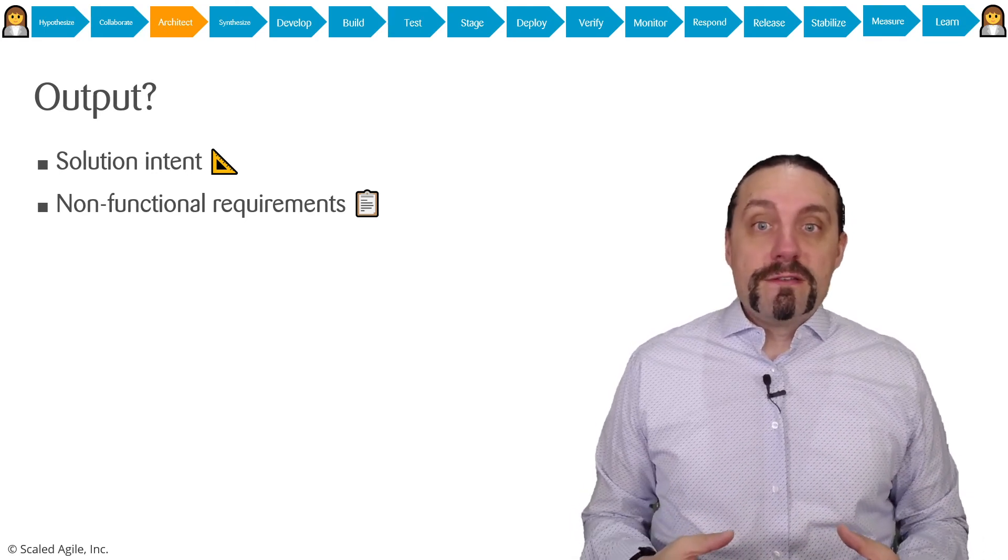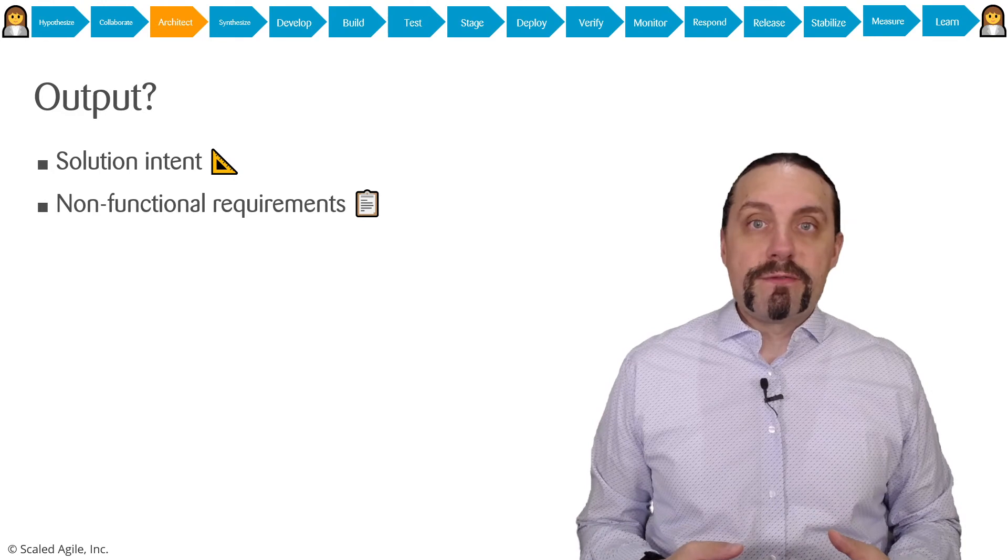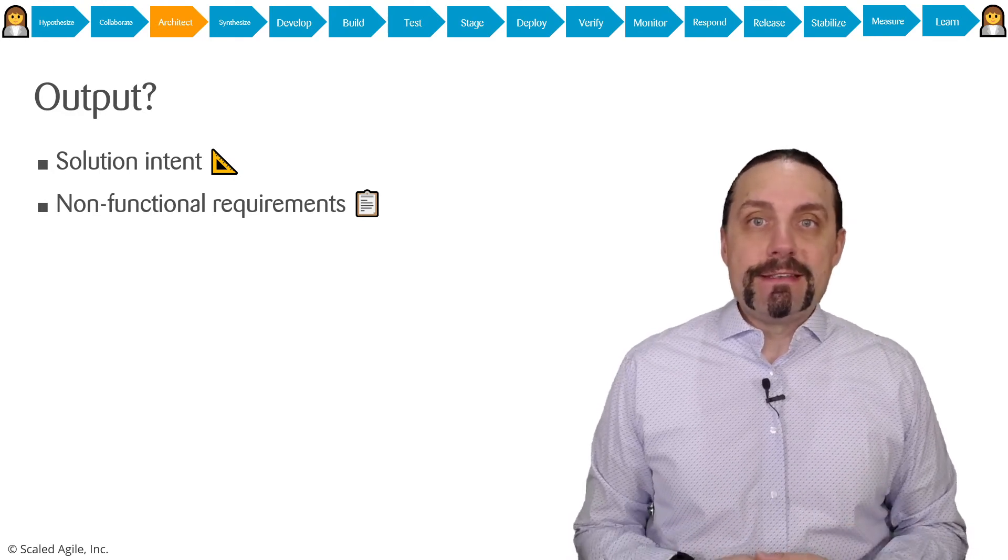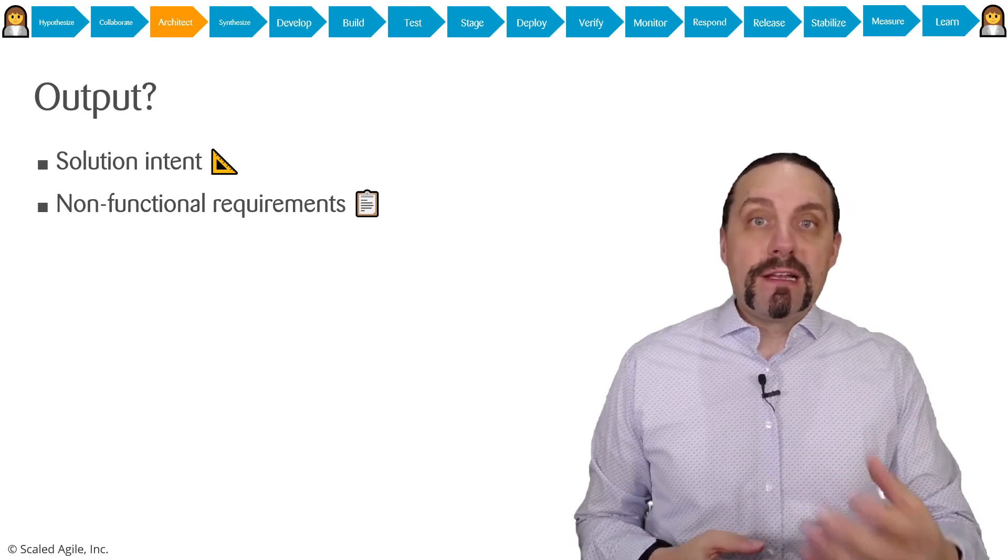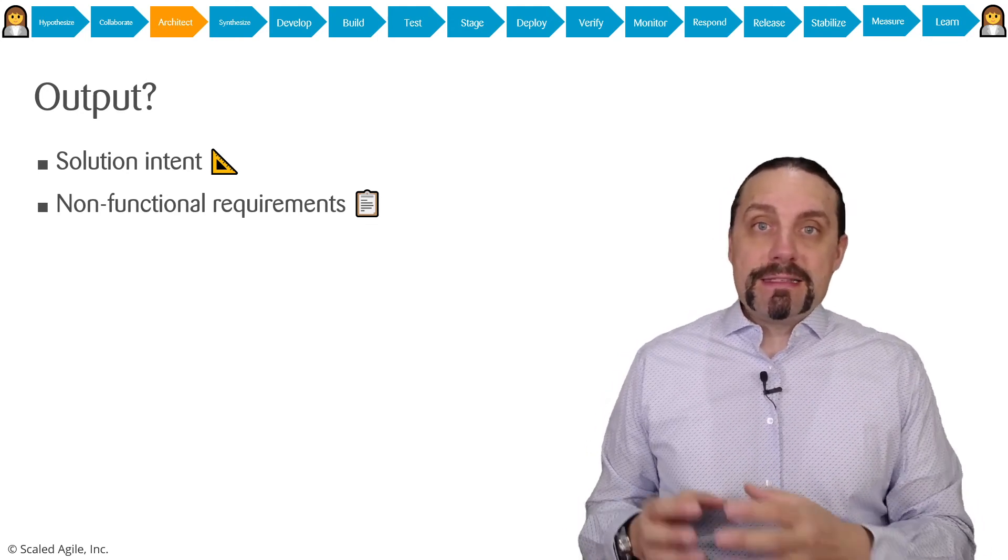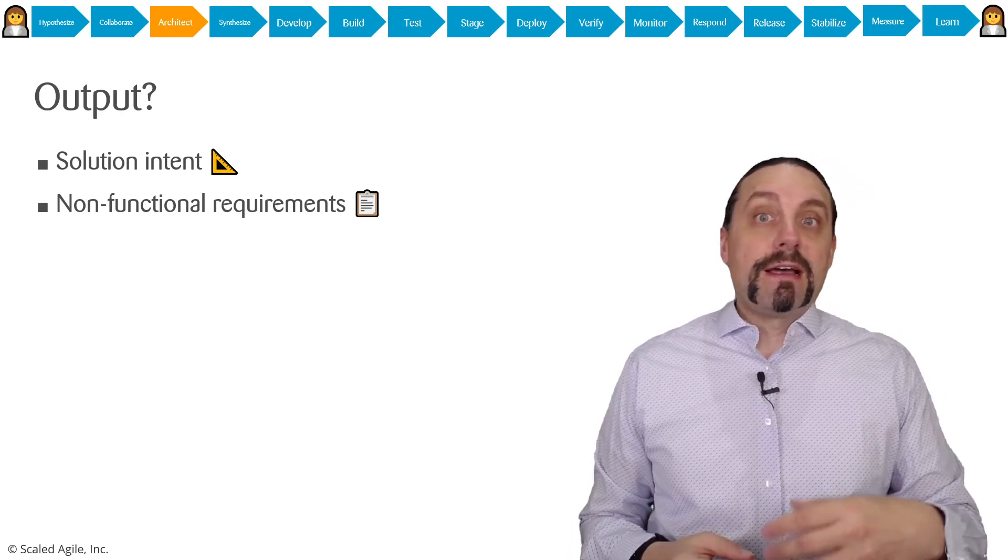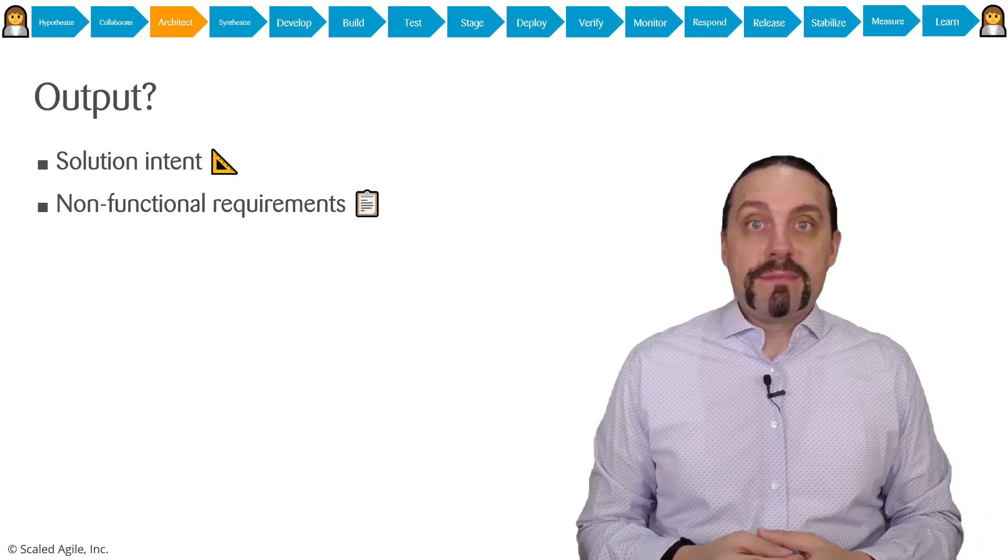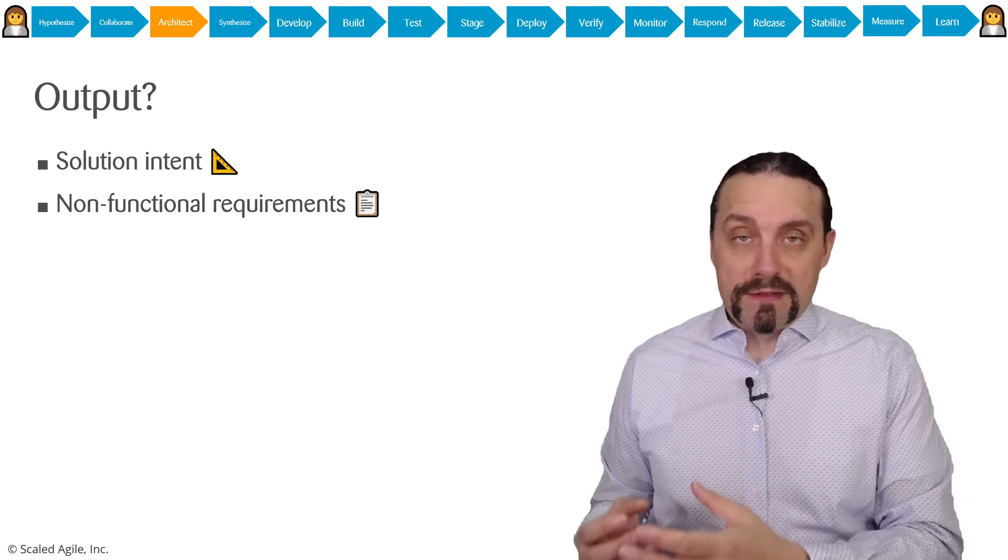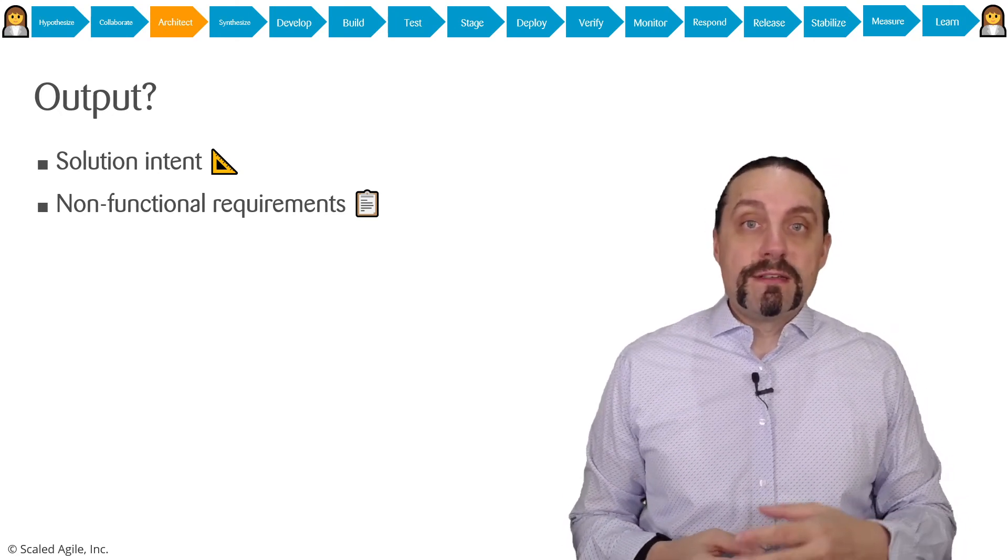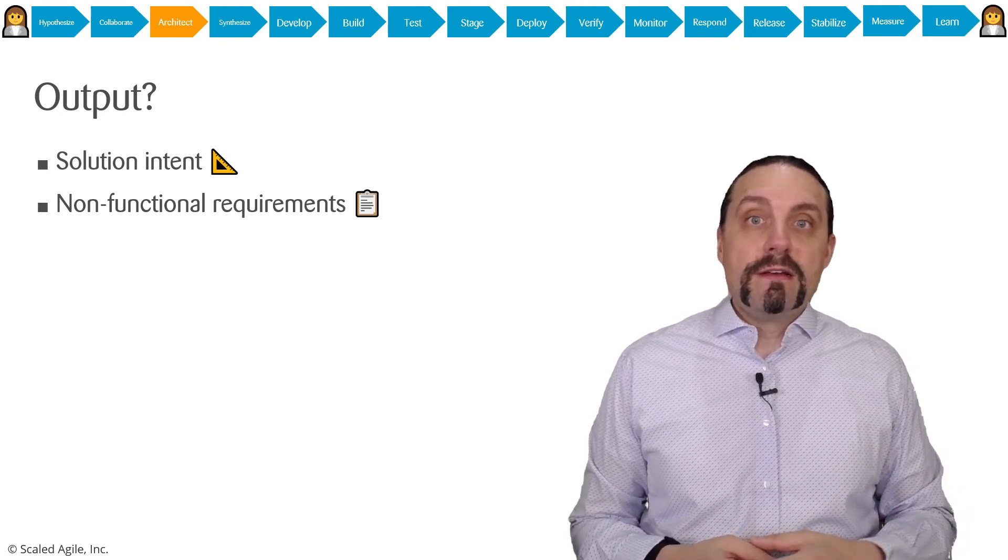And of course we have now a good set of non-functional requirements. Non-functional requirements are the ilities: availability, usability, reliability, and so on. We covered some of them already like releasability or testability. These non-functional requirements need to be tested, and they apply to every user story of our backlog because they are a constraint on the backlog.